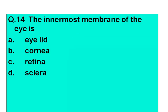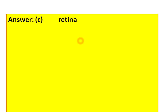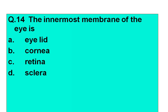Question number 14: The innermost membrane of the eye is — Option A: eyelid. Option B: cornea. Option C: retina. Option D: sclera. The answer is option C, retina. The retina is the innermost membrane of the eye.